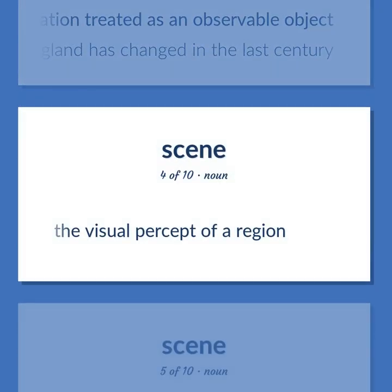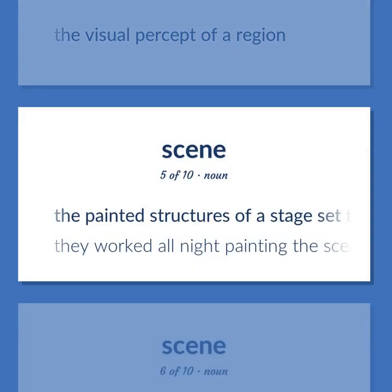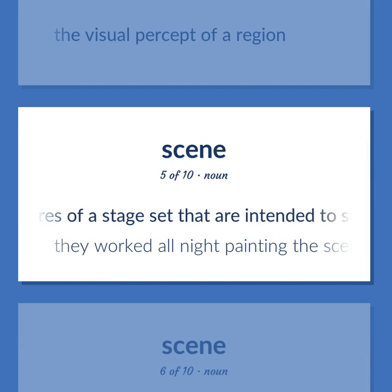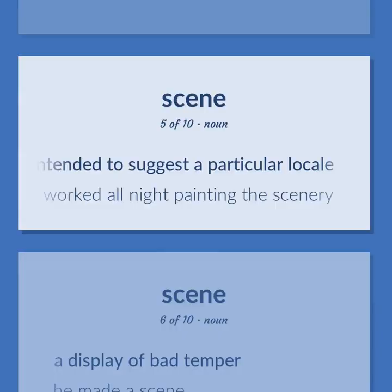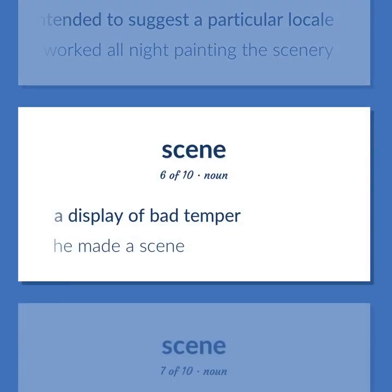Scene: The visual percept of a region. The painted structures of a stage set that are intended to suggest a particular locale. They worked all night painting the scenery. A display of bad temper. He made a scene.